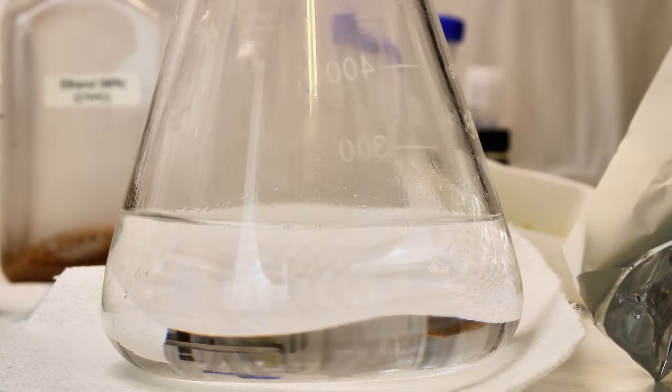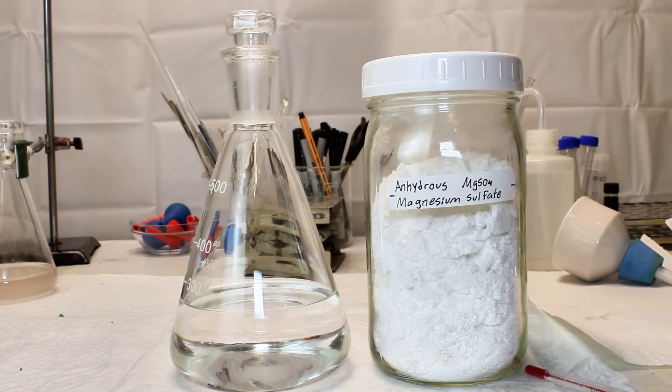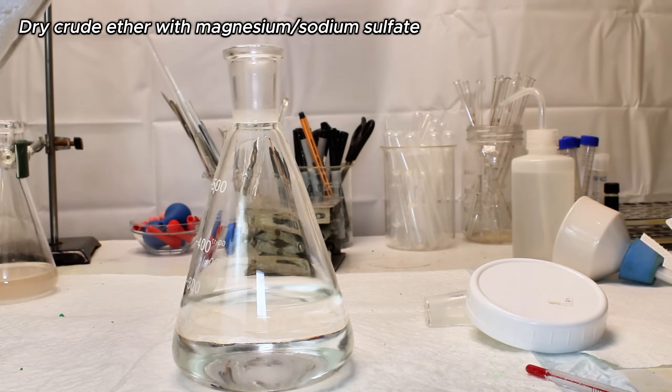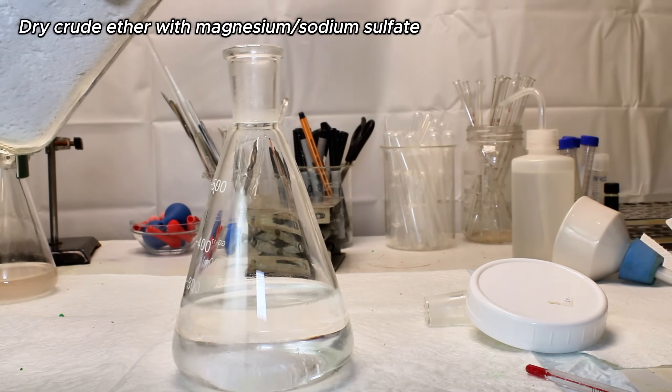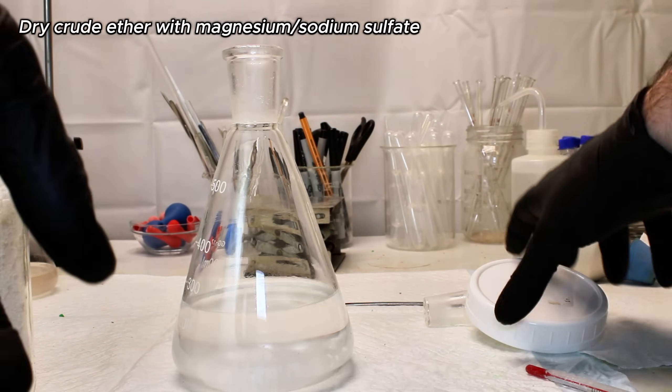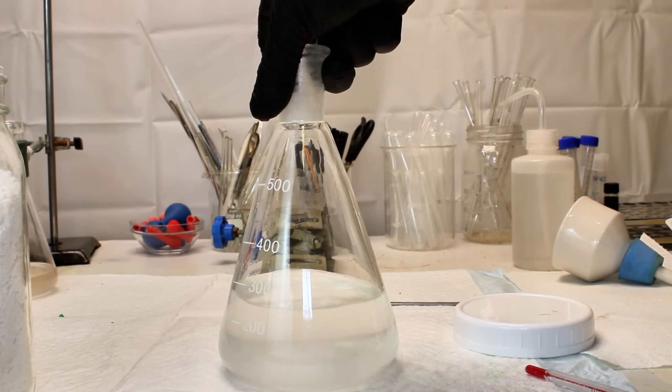Anyway, I continue the reaction until I've added another 150 ml of ethanol, and then I cut the heat and disassemble my apparatus. In the collection flask, I have a crude mixture of diethyl ether, ethanol, and a bit of water. While the volume of water should be very low since sulfuric acid doesn't let go of water very easily at such low temperatures,